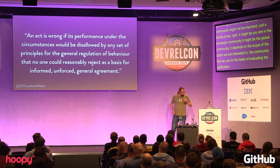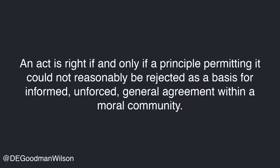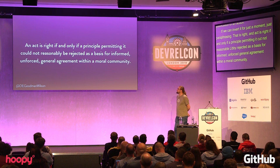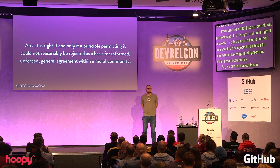So I want to invert this for just a moment. An act is right if and only if a principle permitting it could not be reasonably rejected as a basis for informed, unforced, general agreement within a moral community. For Scanlon, he just defines it in terms of wrong and then says right is whatever is not wrong, which is fair. So we can think about this in concrete terms. Let's imagine that I am trying to decide whether or not I'm going to mug you.